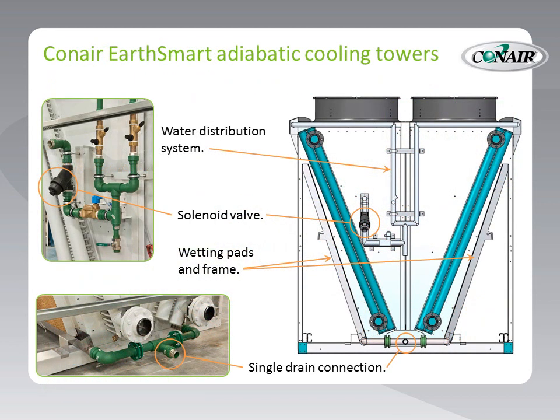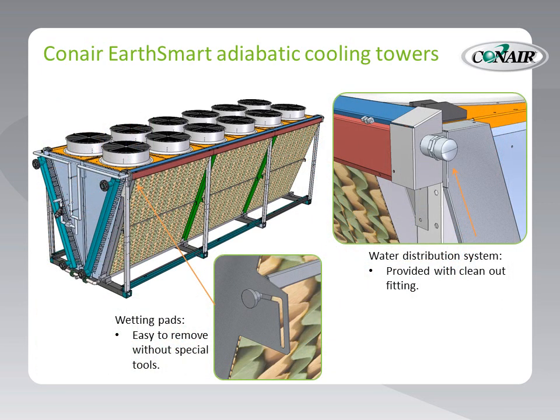Here are the components of the EarthSmart Water Distribution System showing the solenoid valve that provides water to the wetting pads. Also, the single drain connection point accompanied by the stainless steel collection troughs allow neat and easy management of any water that is not evaporated. Wetting pads are easily removable for maintenance, cleaning, or even removal during colder months. Even the water distribution system has a clean-out plug for easy back-flushing of the supply water trough.